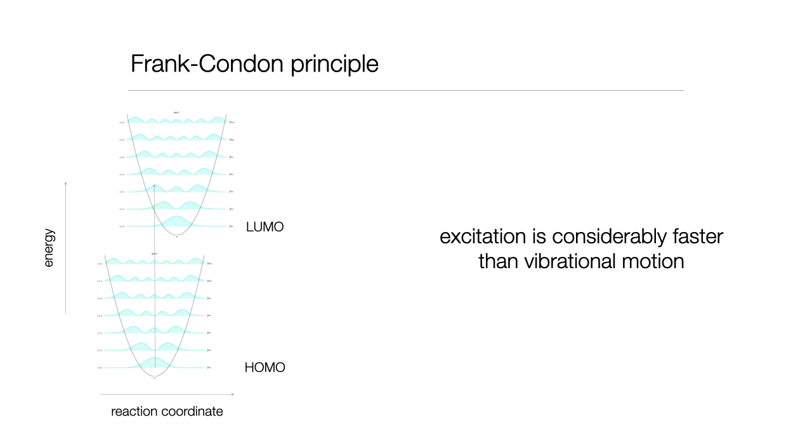So here I've got it going from the ground vibrational to the second excited vibrational level, because that's where I have the best overlap integral. But I will have a very small overlap integral with the ground vibrational level of the LUMO, a slightly bigger one to the first excited state, my biggest one to my second. And you can see the principle as I go up.